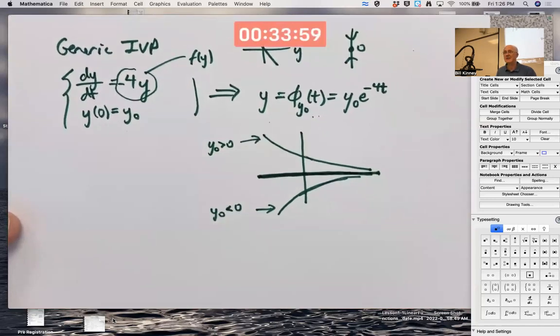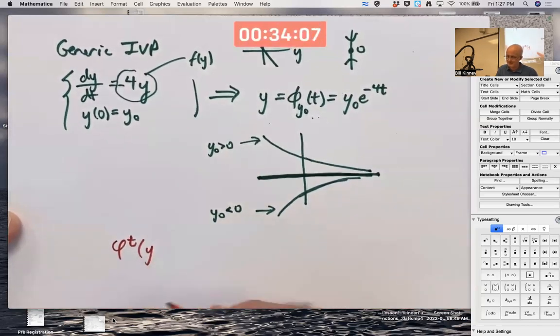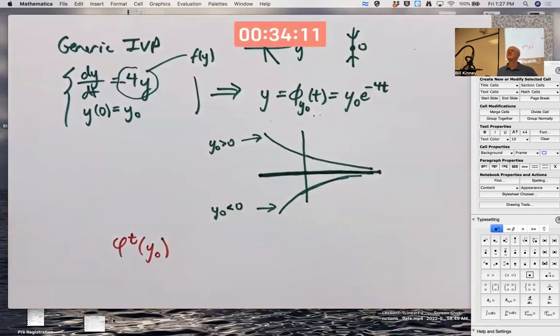To emphasize that, I use slightly different notation. I use a cursive phi, you might call it, superscript t sub of y_0. This notation is not completely standard across all the reading you might do about this. And you can look up flows of differential equations online if you like. Not completely standard notation.